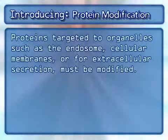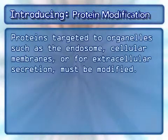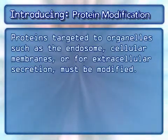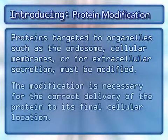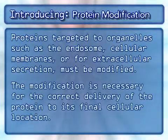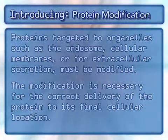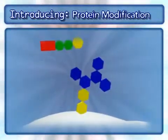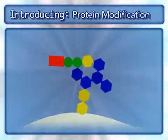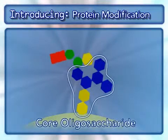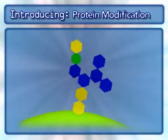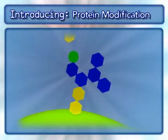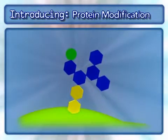Proteins targeted to organelles, such as the endosome, cellular membranes, or for extracellular secretion must be modified. The modification is necessary for the correct delivery of the protein to its final cellular location. The modification occurs when specific sugar molecules are added to a core oligosaccharide that is attached to the protein. These sugar complexes are the signal often required to direct the protein to its final destination.